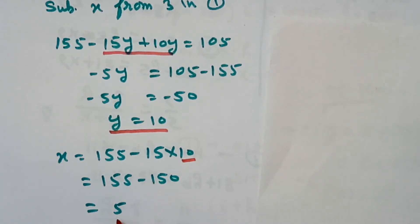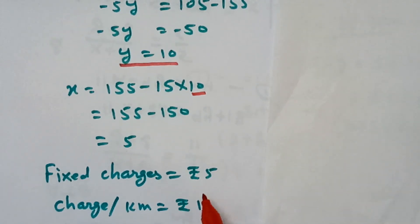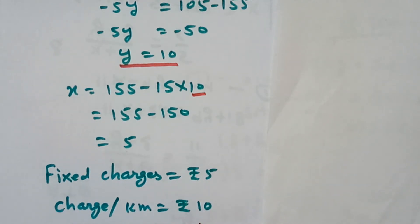x is 5 means fixed charge. Fixed charge is 5 and charge per km is Rs. 10.